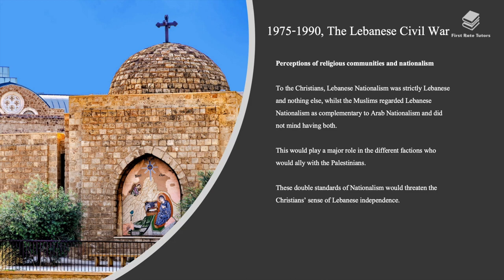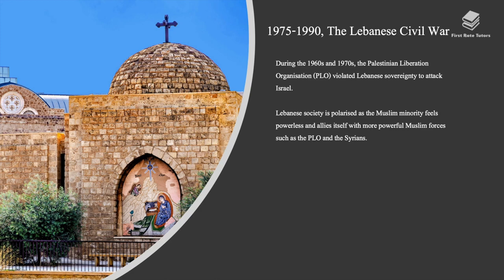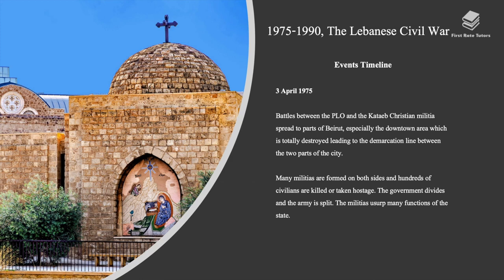To the Christians, Lebanese nationalism was strictly Lebanese and nothing else, whilst the Muslims regarded Lebanese nationalism as complementary to Arab nationalism and did not mind having both. This would play a major role in determining which factions would ally with the Palestinians. These double standards of nationalism would threaten the Christian sense of Lebanese independence. During the 1960s and 1970s, the Palestinian Liberation Organization violated Lebanese sovereignty to attack Israel. Lebanese society became polarized as the Muslim minority felt powerless and allied itself with more powerful Muslim forces such as the PLO. In April 1975, battles between the PLO and the Kataeb Christian militia spread to parts of Beirut, especially the downtown area, which was totally destroyed, leading to a demarcation line between the two parts of the city. Many militias were formed on both sides, hundreds of civilians were killed or taken hostage, the government divided, the army split, and militias usurped many functions of the state.